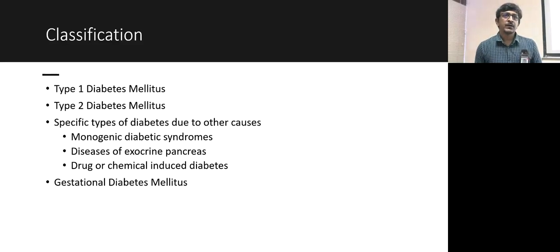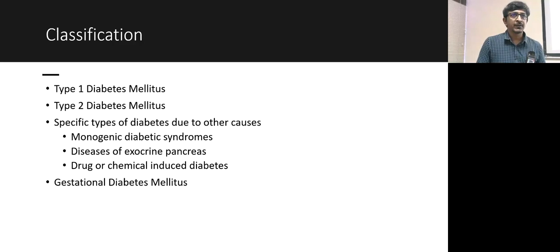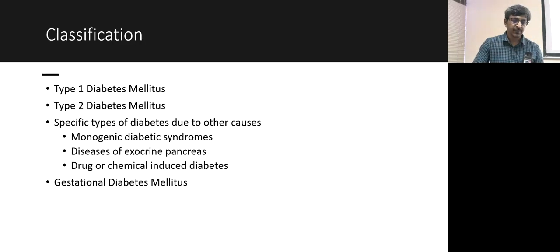Diabetes mellitus according to the latest guidelines is classified into these types: type 1 diabetes, type 2 diabetes, and specific types of diabetes of other causes — which include monogenic diabetic syndromes like MODY, diseases of the exocrine pancreas, drug or chemical-induced diabetes. And finally, gestational diabetes mellitus.